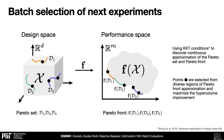The hypervolume improvement is a standard quality measure of the obtained Pareto front. In contrast to previous works, our diversity metric takes the knowledge from both design and performance space to better select the batch of next experiments.